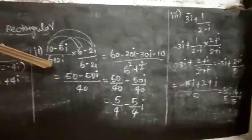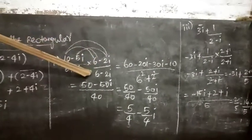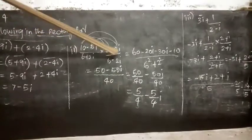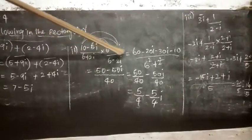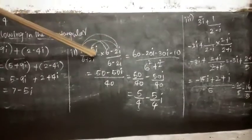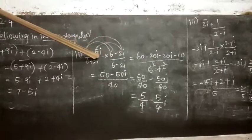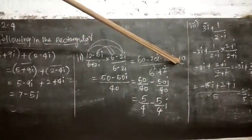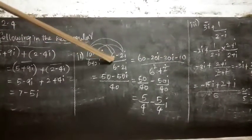Second problem: (10 - 5i) divided by (6 + 2i). Taking conjugate of denominator: multiply by (6 - 2i) over (6 - 2i). Expanding the numerator: 10 into 6 is 60, 10 into minus 2i is minus 20i, minus 5i into 6 is minus 30i, and minus 5i into minus 2i gives plus 10i squared which equals minus 10.